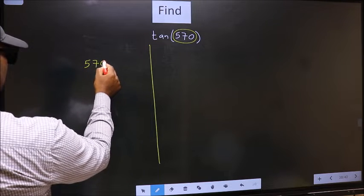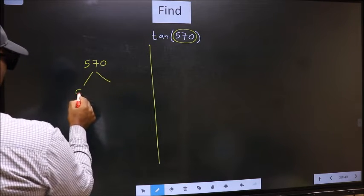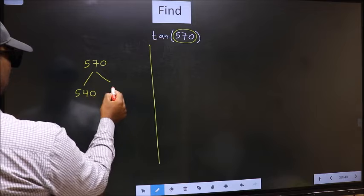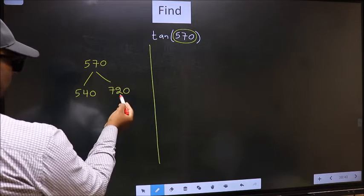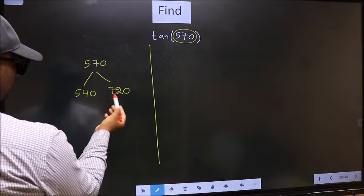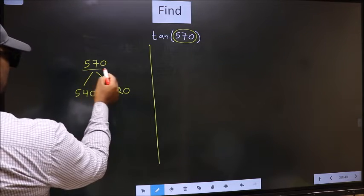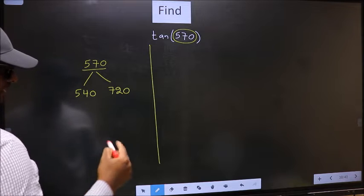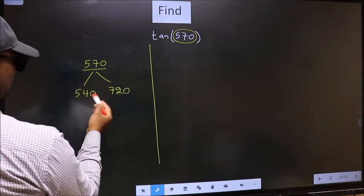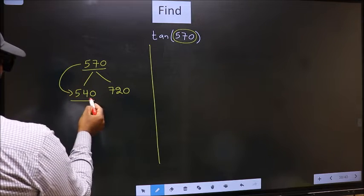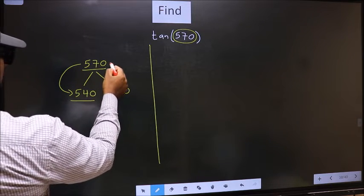570 lies between 540 and 720. This is 180×3 and this is 180×4. Between these two numbers, 570 lies. Next, 570 is close to which number? This is close to 540. So in place of this...